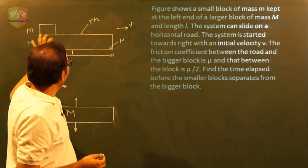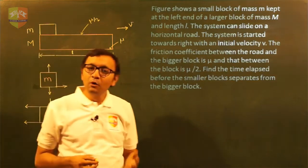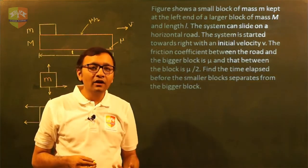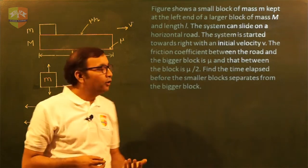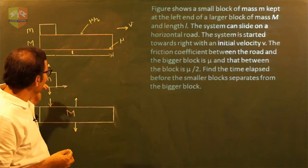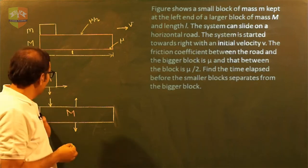The coefficient of friction between small m and capital M is mu by 2, and coefficient of friction between capital M and the ground is mu. Here we need to find out how much time small m takes to cross the capital M.